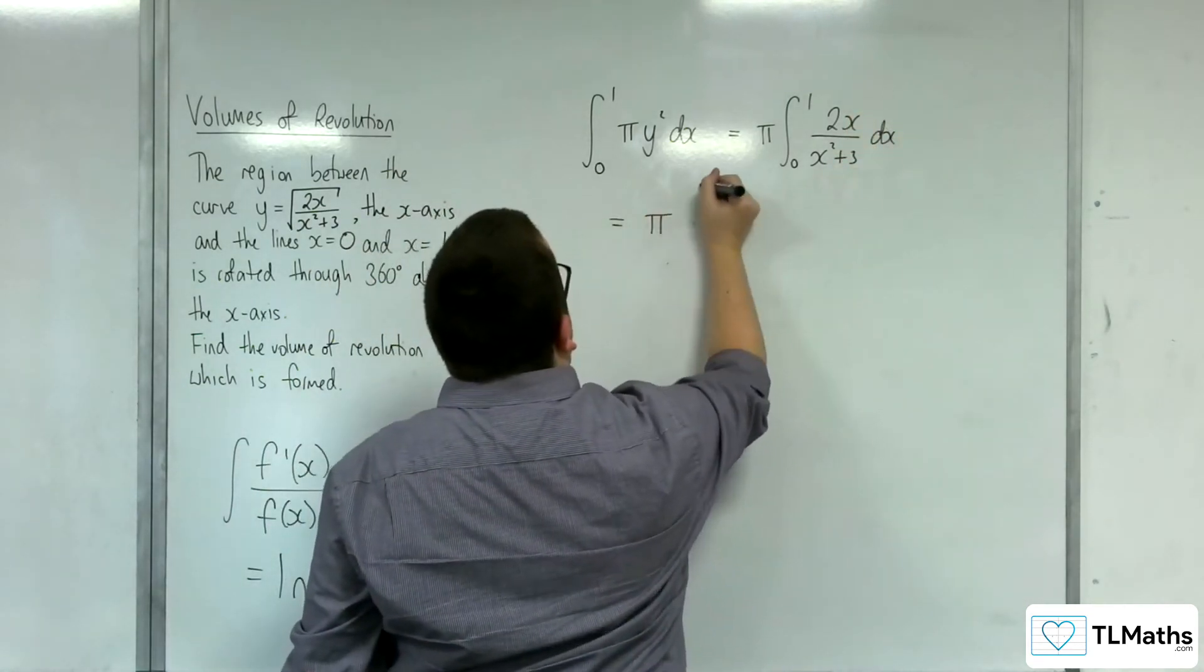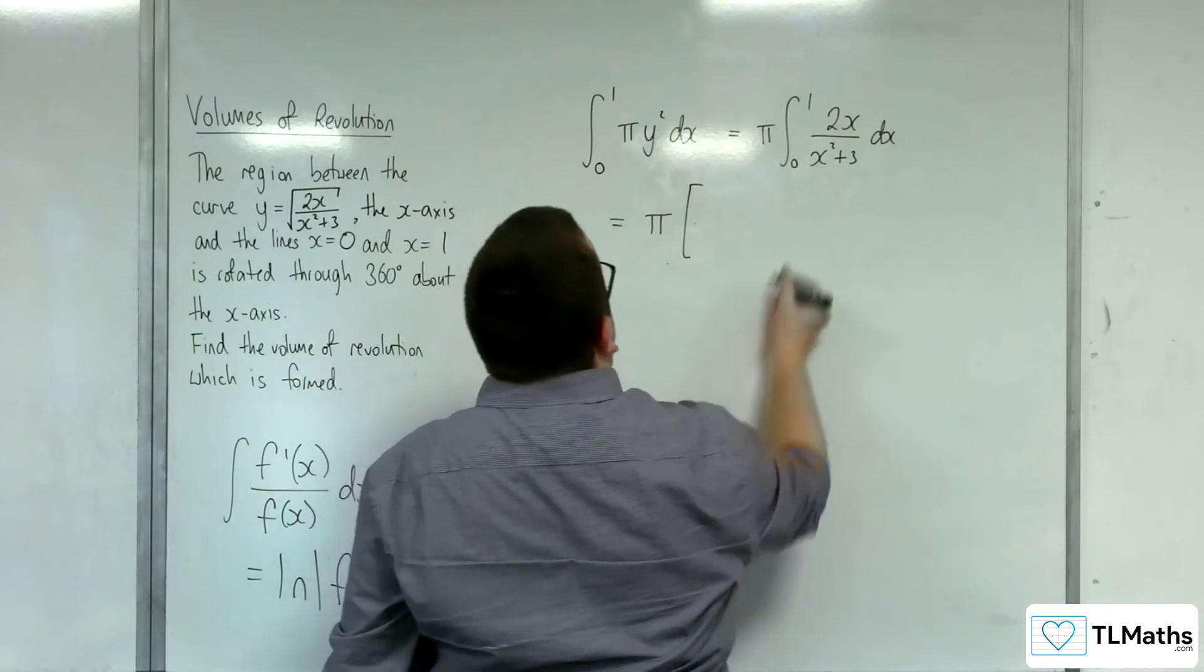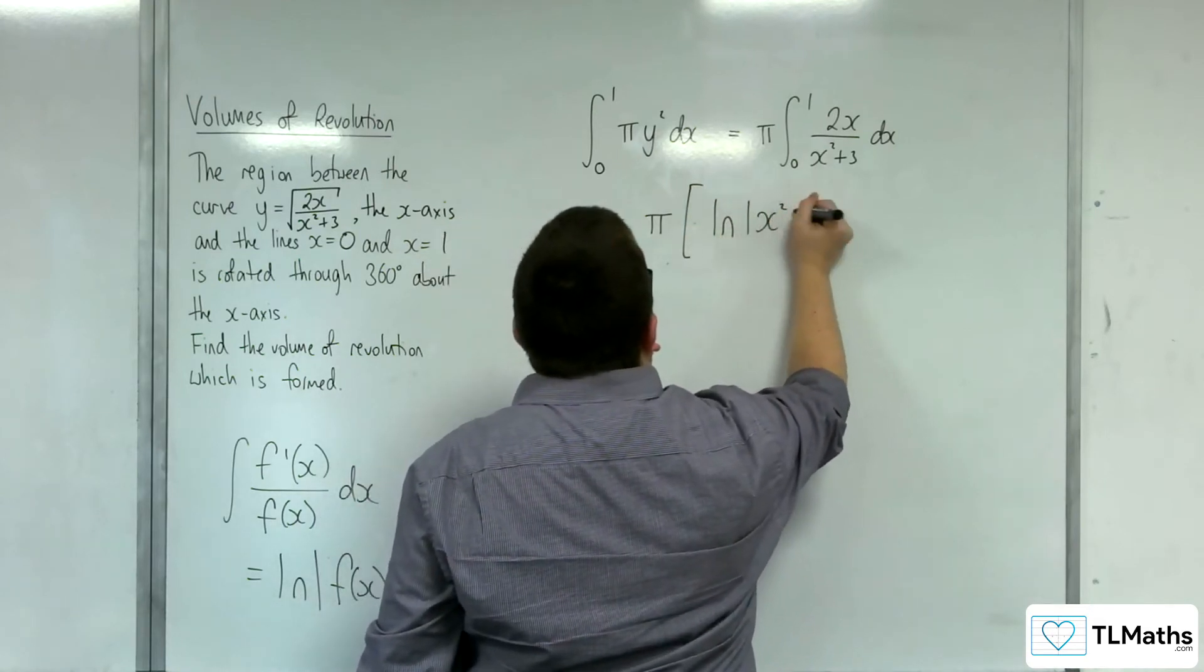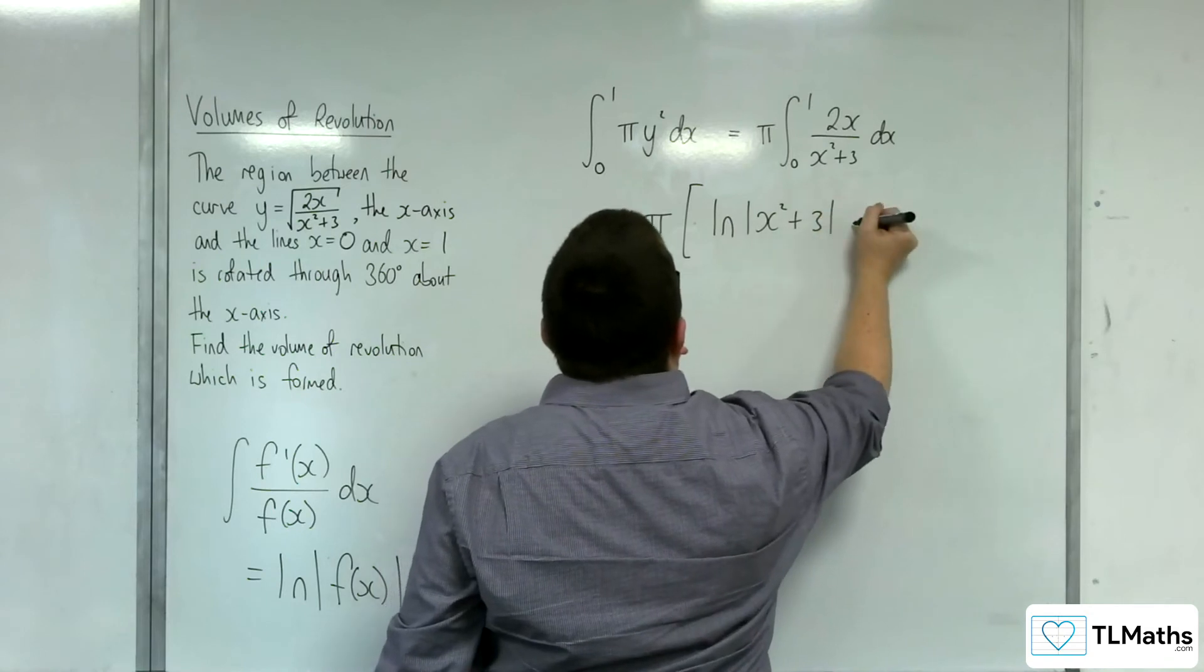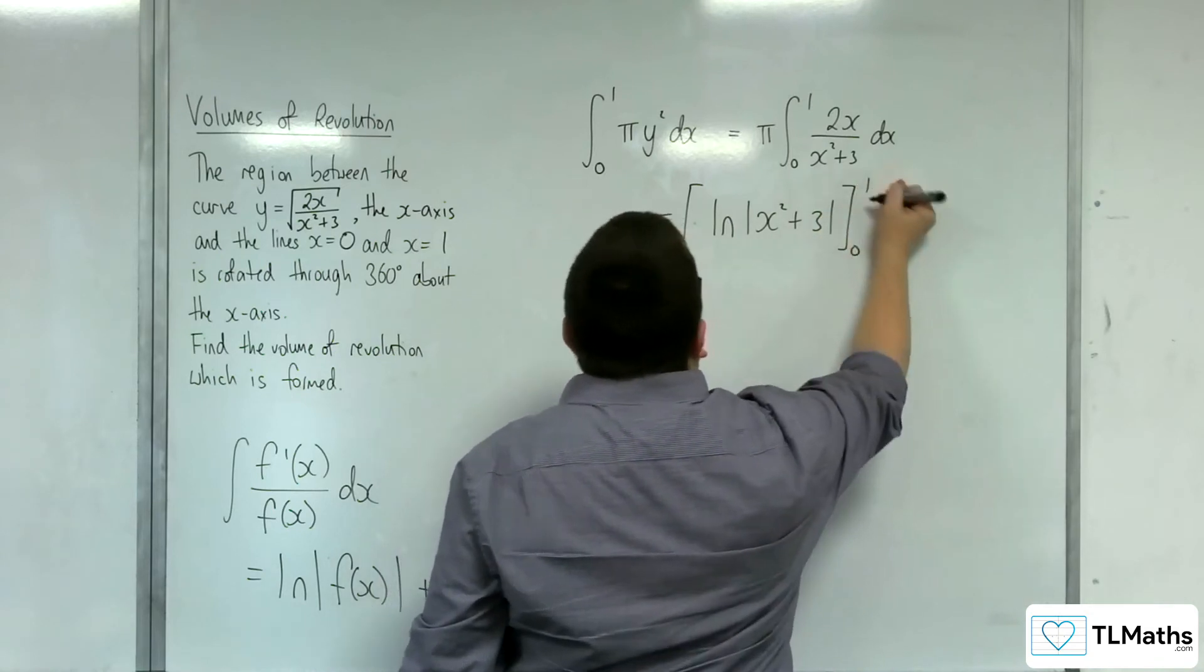This will be pi times the natural logarithm of x squared plus 3, evaluated between 0 and 1.